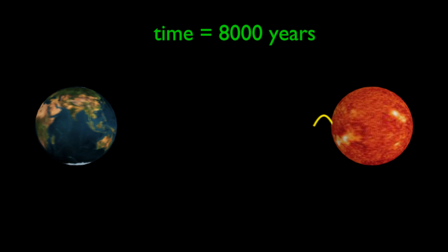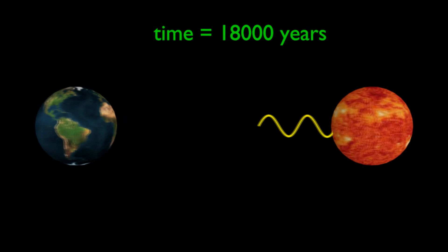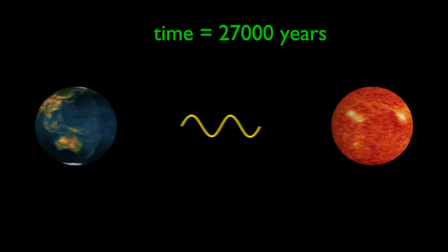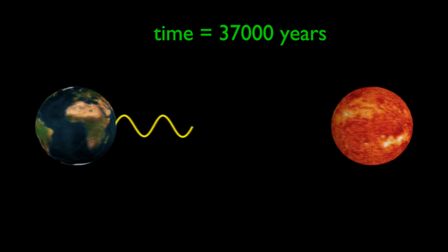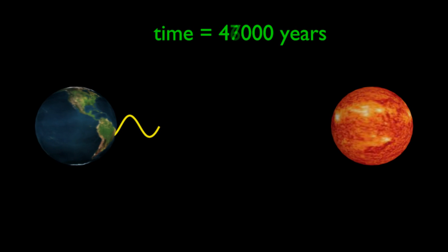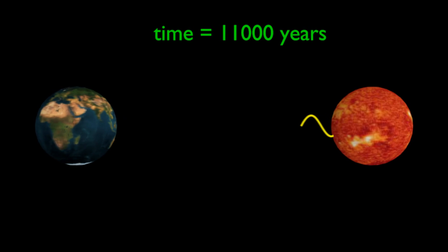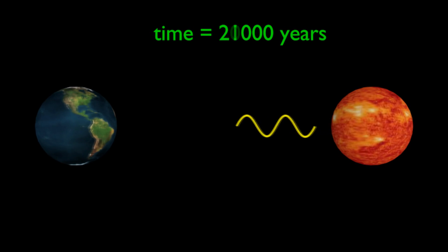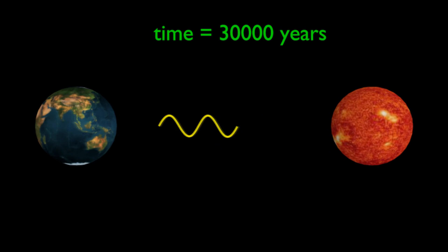Finally, there is the distant starlight problem. If all the stars were created 6,000 years ago, then we should only be able to see stars that are less than 6,000 light years away. This is because light travels one light year per year, and thus there hasn't been enough time for light from objects more than 6,000 light years from earth to reach us.